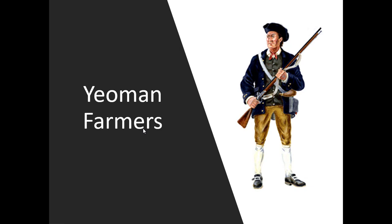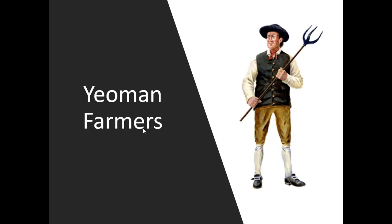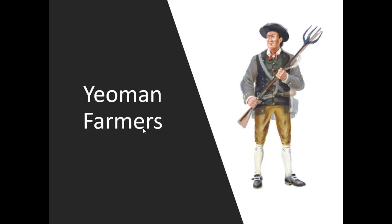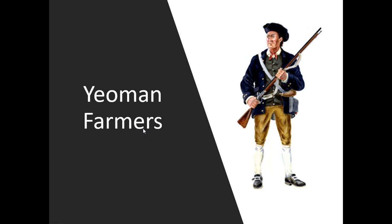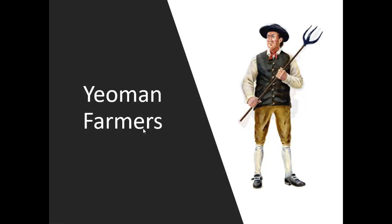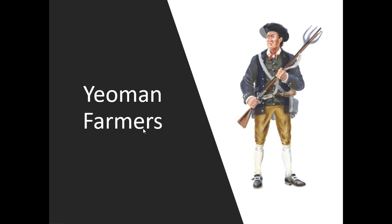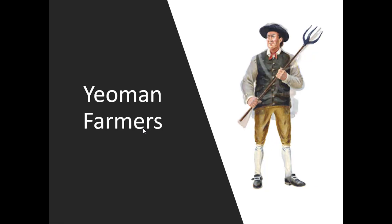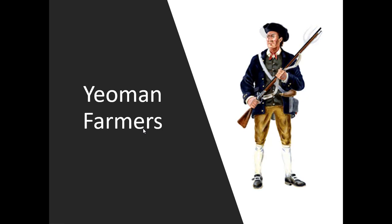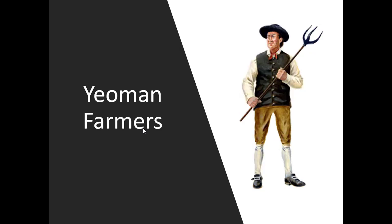A yeoman farmer owned their own small farm and worked it with family labor — the ideal American: honest, virtuous, hardworking, independent. If needed, they'd throw down their pitchfork and pick up a musket to defend their community. Yeoman farmers were central to the republican vision of the new nation, and they did not need large numbers of laborers like slaves. They were seen as citizens with political influence, and one reason people had so many children was more hands to work the farm.